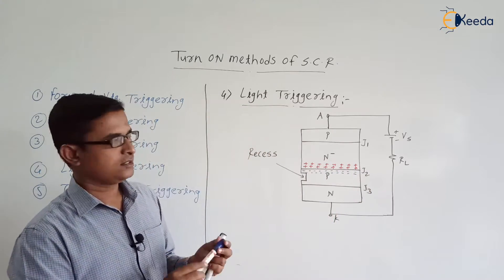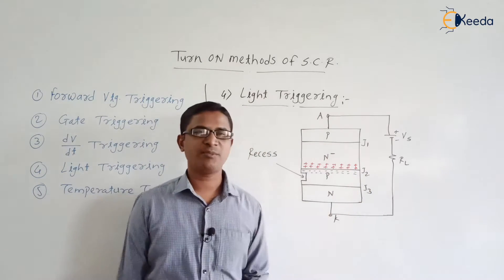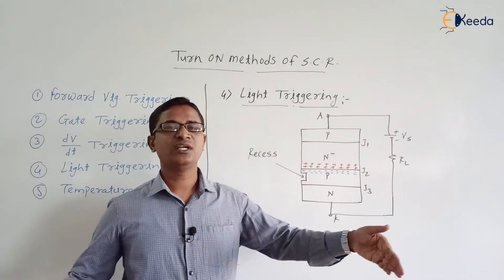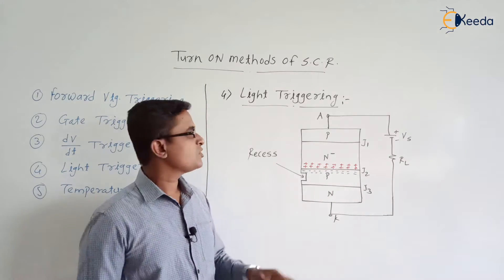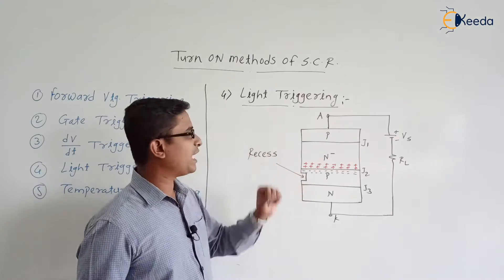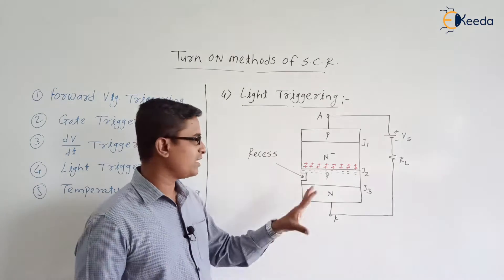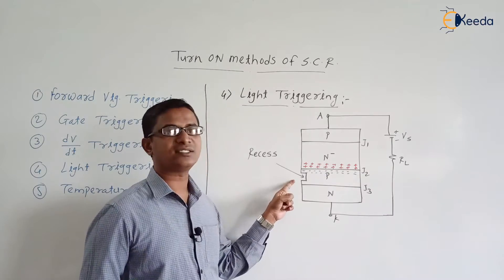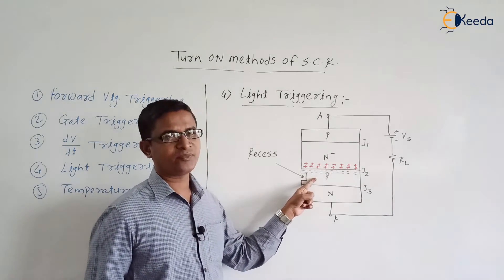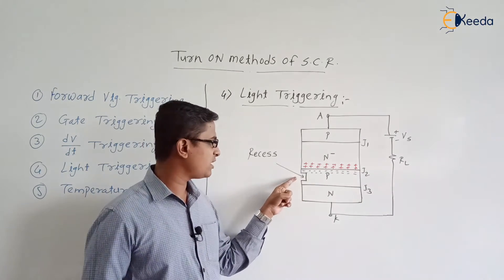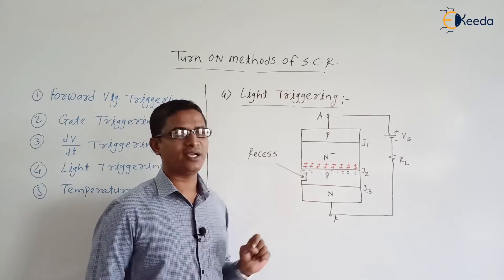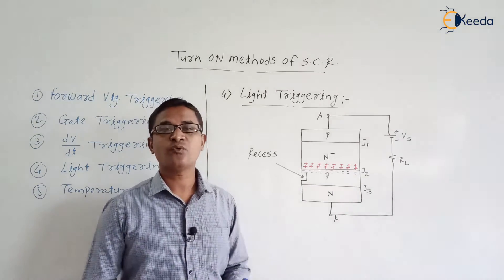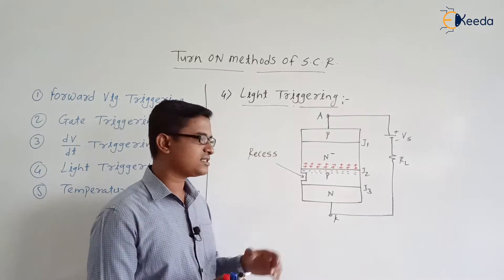We are not having a problem with junctions J1 and J3 because they are in forward bias mode. We are having a problem with junction J2 because its depletion layer width is increasing. In the light triggering method, specifically designed SCRs are used. In these specifically designed SCRs, at the inner P-type layer, generally a recess is provided — R-E-C-E-S-S, the recess is provided.